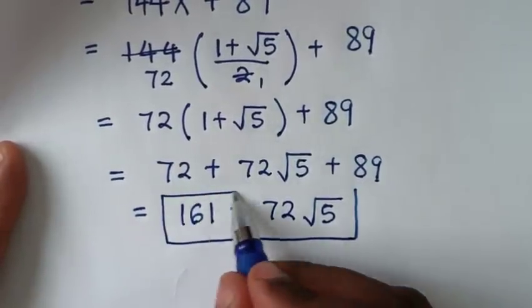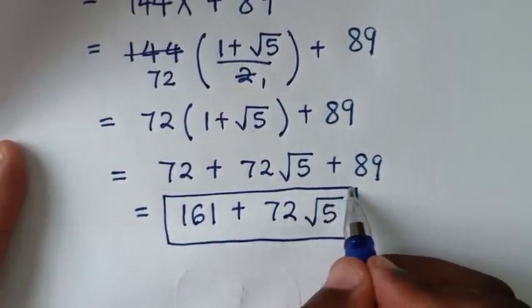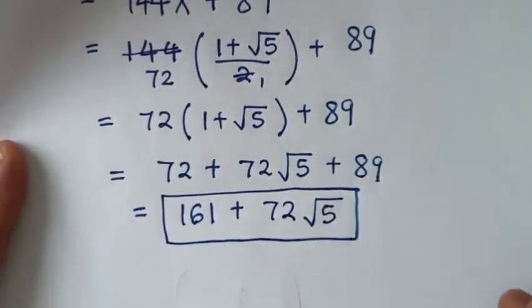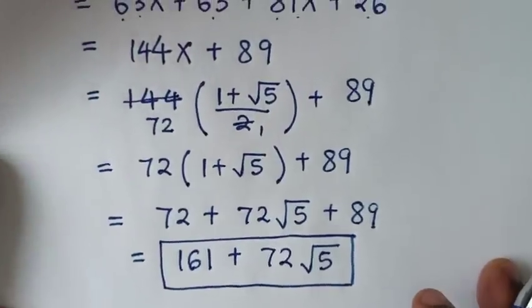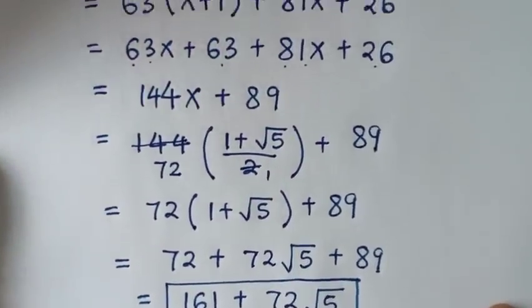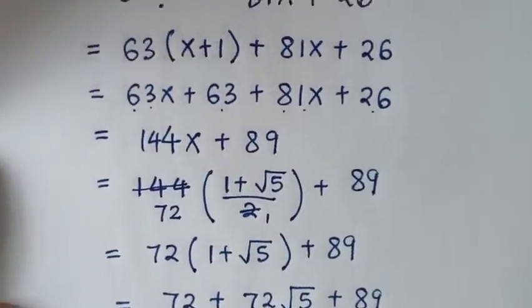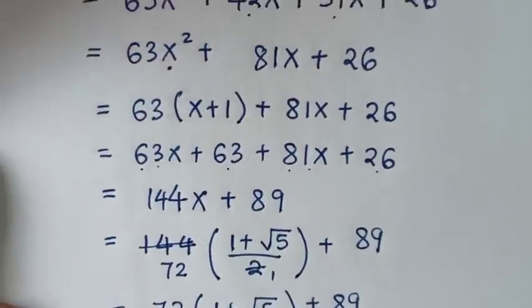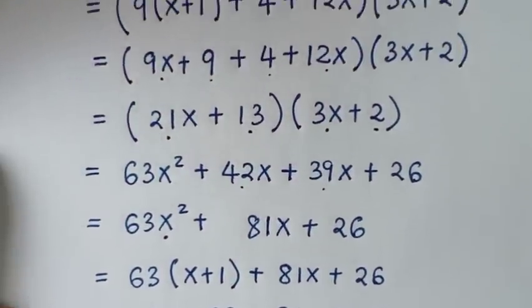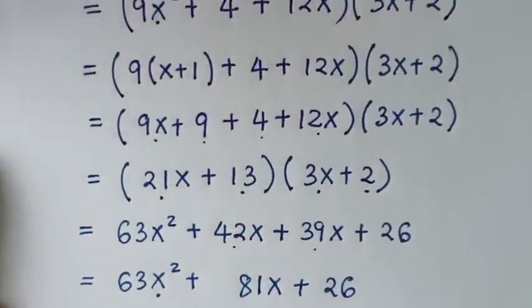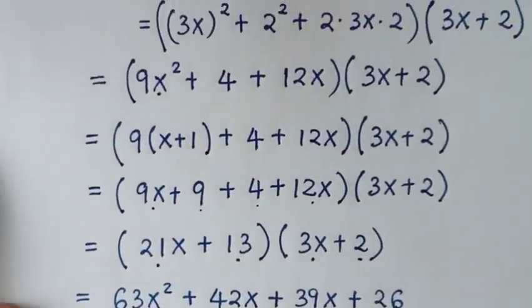So the simplified form of our problem is 161 + 72√5. Thank you for watching. Don't forget to subscribe to my channel and see you in the next video.